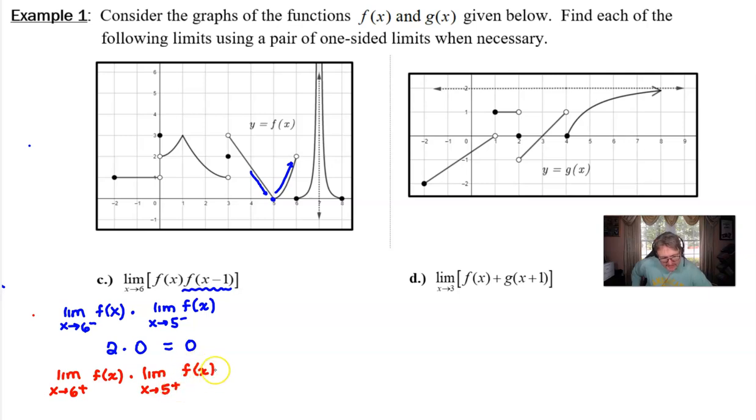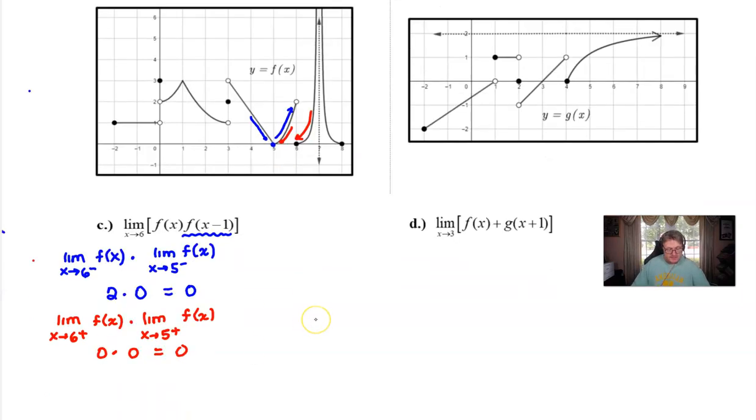But that in and of itself means very little to us unless we work through the limit as x approaches six from the right side of this particular expression which means that the second part would be x approaching five from the right of the original f of x. Approach six from the right, you're going to get that zero and if we approach five from the right we're going to get zero as well. Of course zero times zero is zero.